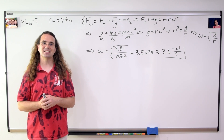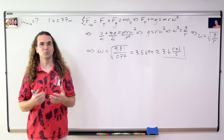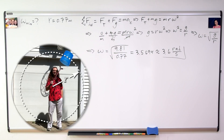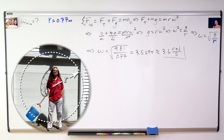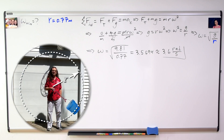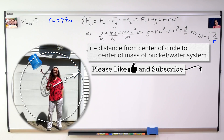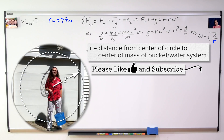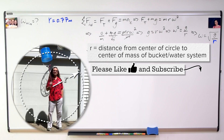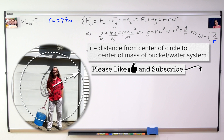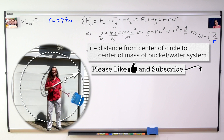Thank you very much for learning with me today. I enjoyed learning with you. I would like to take a moment to clarify the variable r, the radius in this problem. I referred to it as the rope radius, which is not quite correct. r is the radius of the circle, which means it is the distance from the center of the circle to the center of mass of the bucket-water system, which is a bit longer than the length of the rope, but it is the 0.77 meters which I measured.